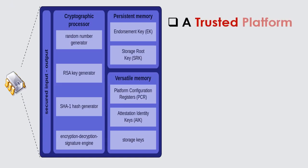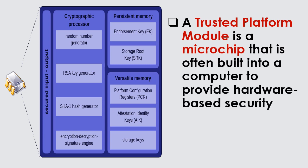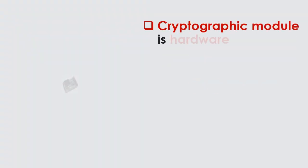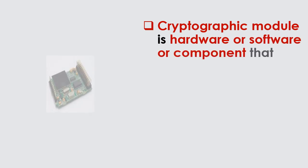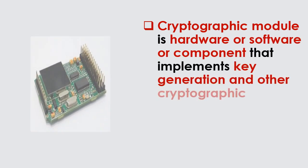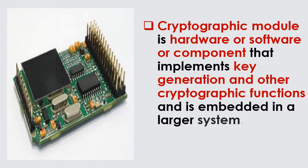A trusted platform module (TPM) is a microchip that is often built into a computer to provide hardware-based security. A cryptographic module is hardware, software, or a component that implements key generation and other cryptographic functions, and is embedded in a larger system.